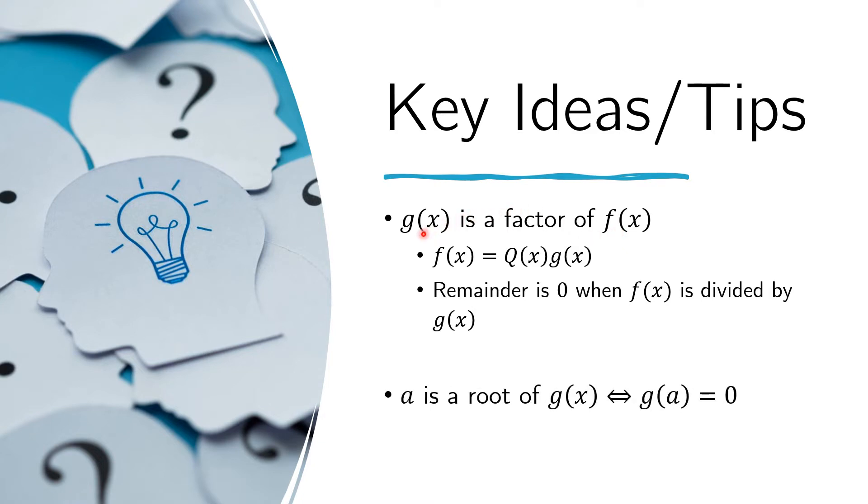And if it's a factor of f of x, and if we know that some constant a is a root of g of x—root of g of x means that if you substitute it at x, so g of a, you should get zero. If this is the case, then if we substitute a to f of x, we also get zero.